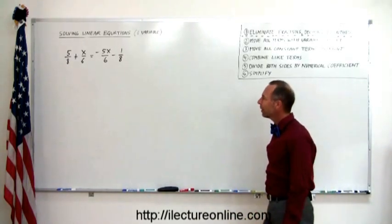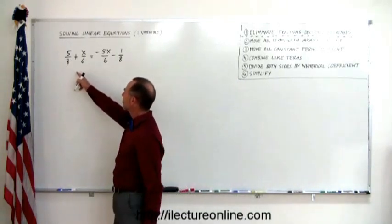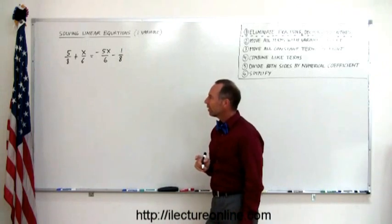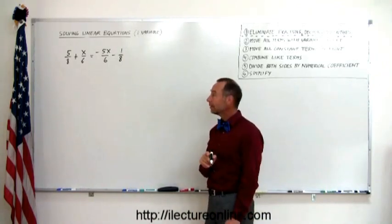How do you do that? Alright, you look at all these denominators, you see an 8, a 6, a 6, and an 8. The trick is to find the lowest common denominator.